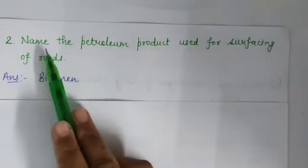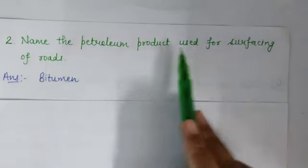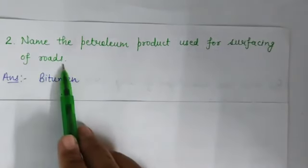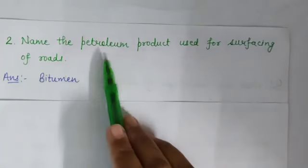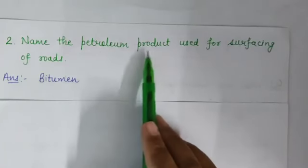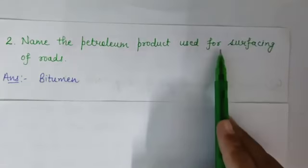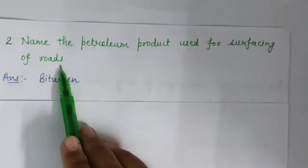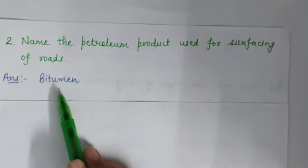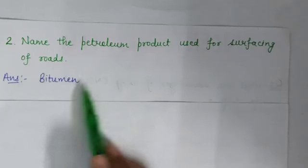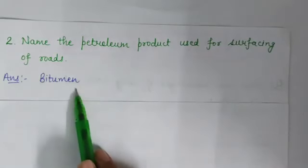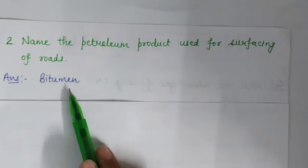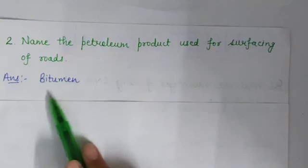Question number 2 is: name the petroleum product used for surfacing of roads. The answer is bitumen. Bitumen is a petroleum product; it is the leftover part of petroleum and is used for making road surfaces.